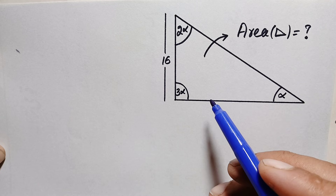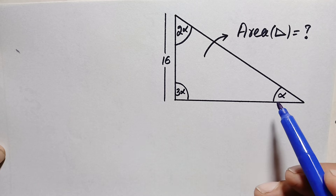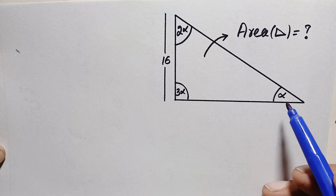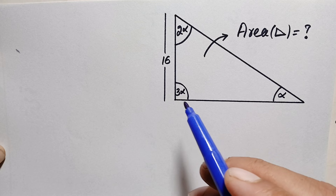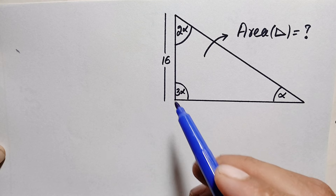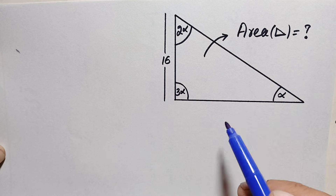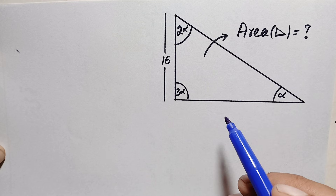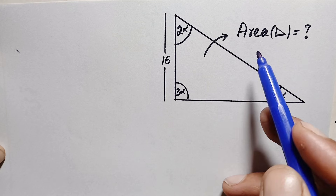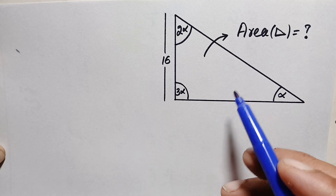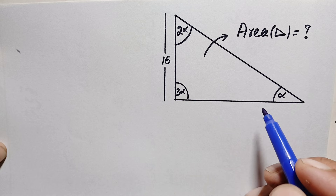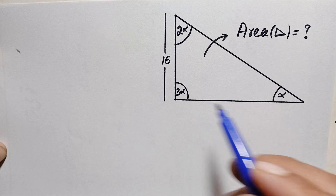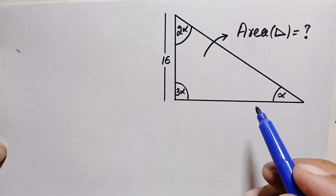To find the area of this triangle, we will first find the three angles alpha, 2 alpha, and 3 alpha, then find the lengths of two sides, and finally calculate the area.